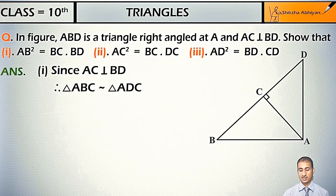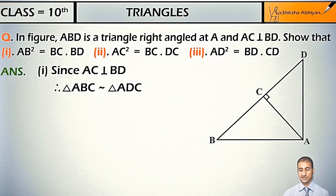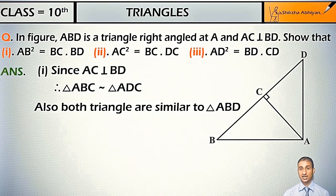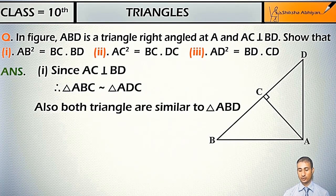Therefore triangle ABC is similar to triangle ADC. Also both triangles are similar to triangle ABD. Triangle ABC is similar to triangle ABD.